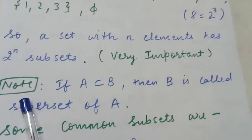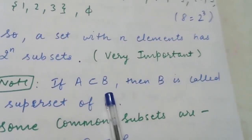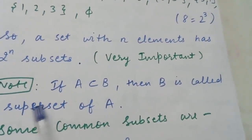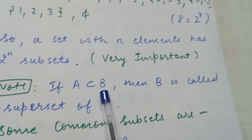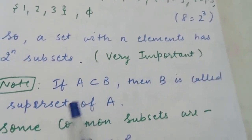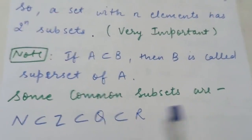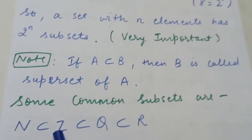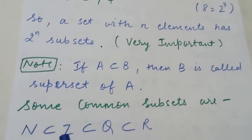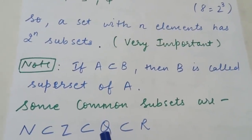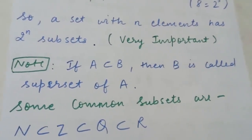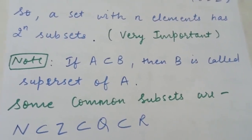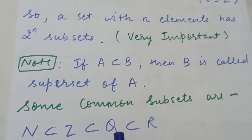Note: if A is a subset of B, then B is called the superset of A. Some common subset relationships: the natural numbers N are a subset of integers, integers are a subset of rational numbers, rational numbers are a subset of real numbers, and irrational numbers are also a subset of real numbers.